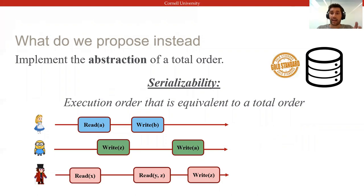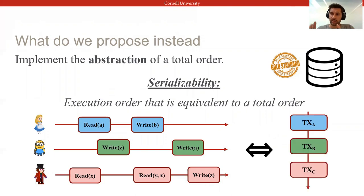Serializability states that Alice, Bob, and Charlie's transactions can execute in parallel and in a non-atomic fashion because their operation outcomes are equivalent to the sequential execution of first Alice, then Bob, then Charlie.